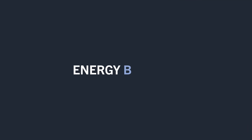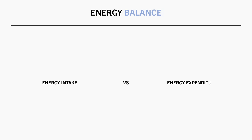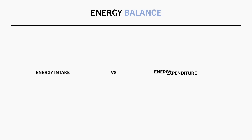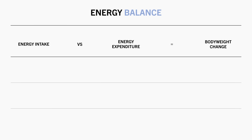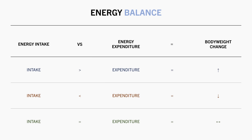Before exploring the components of energy expenditure, it is first important to understand why this is even something we are concerned with. From a body composition perspective, this is relevant to achieve a desired energy balance state. The difference between energy intake and energy expenditure ultimately determines our long-term body weight change. Consuming more calories than we expend results in weight gain over time, consuming less results in weight loss, and consuming equal calories results in weight maintenance.